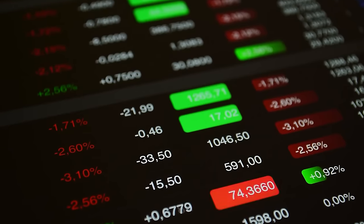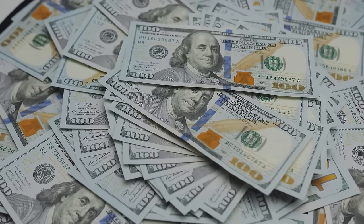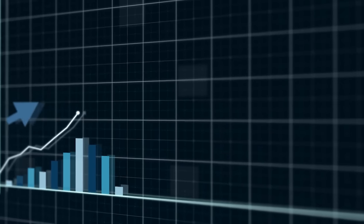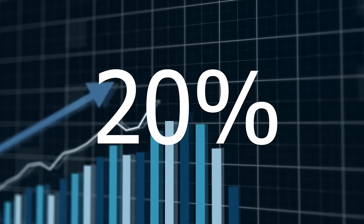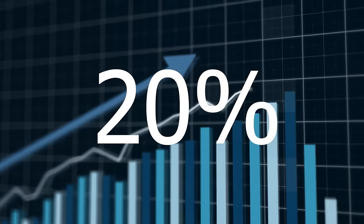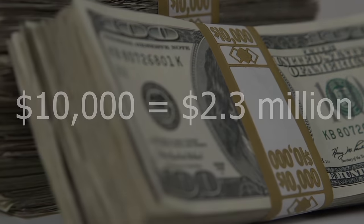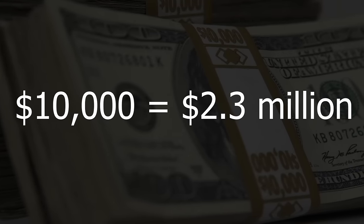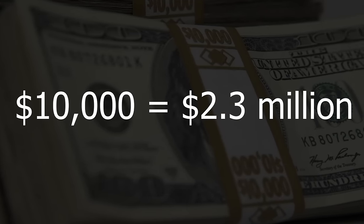Seth Klarman is one of the best investors in the market today and is estimated to be worth $1.3 billion. Seth has managed to achieve a 20% compounded annual return rate for 30 years. This means that if you invested $10,000 with Seth 30 years ago, you would now have over $2.3 million. Warren Buffett has said there's only a handful of people he believes could reliably beat the market, and Seth Klarman is one of them.